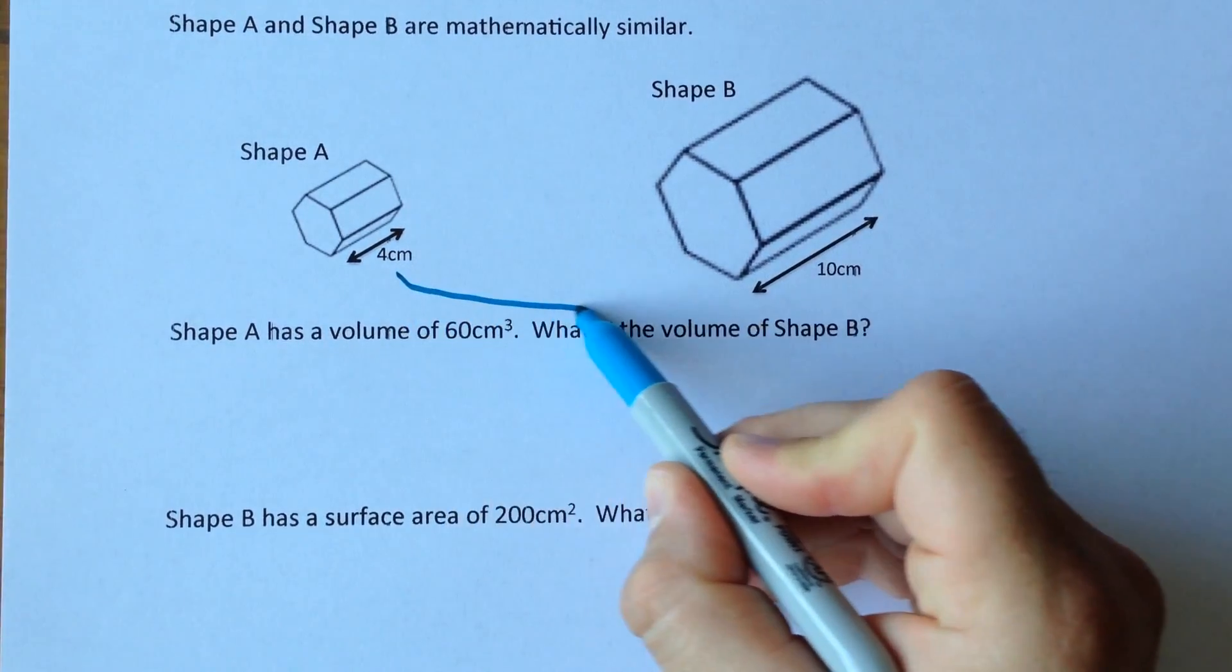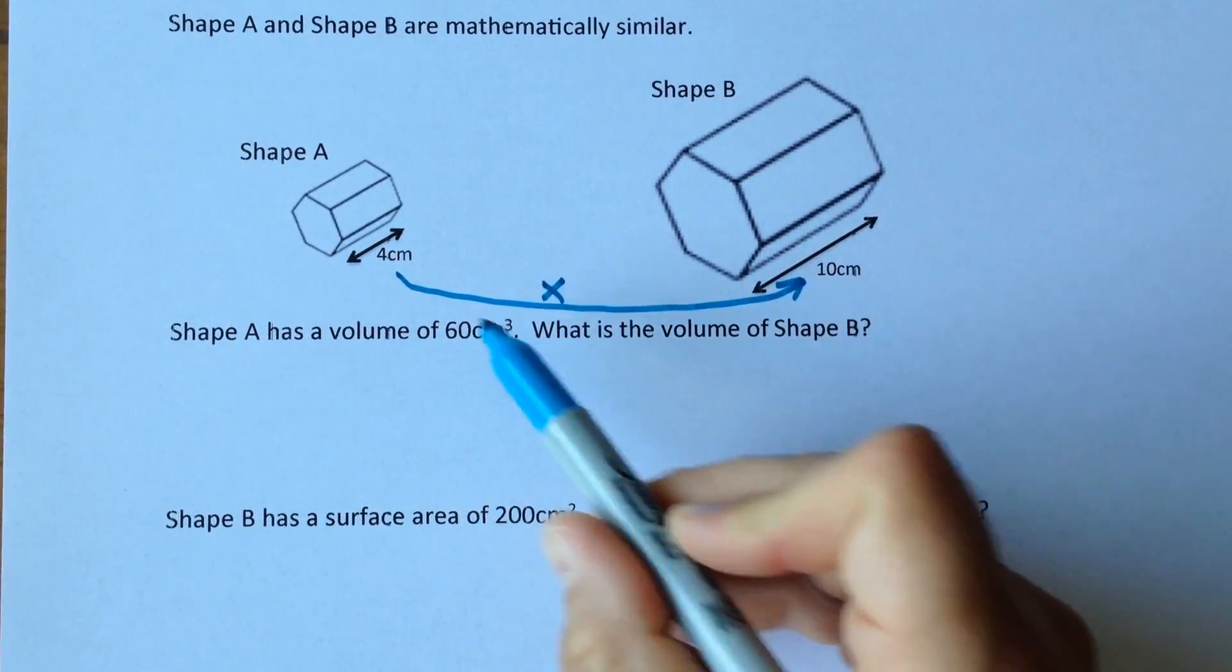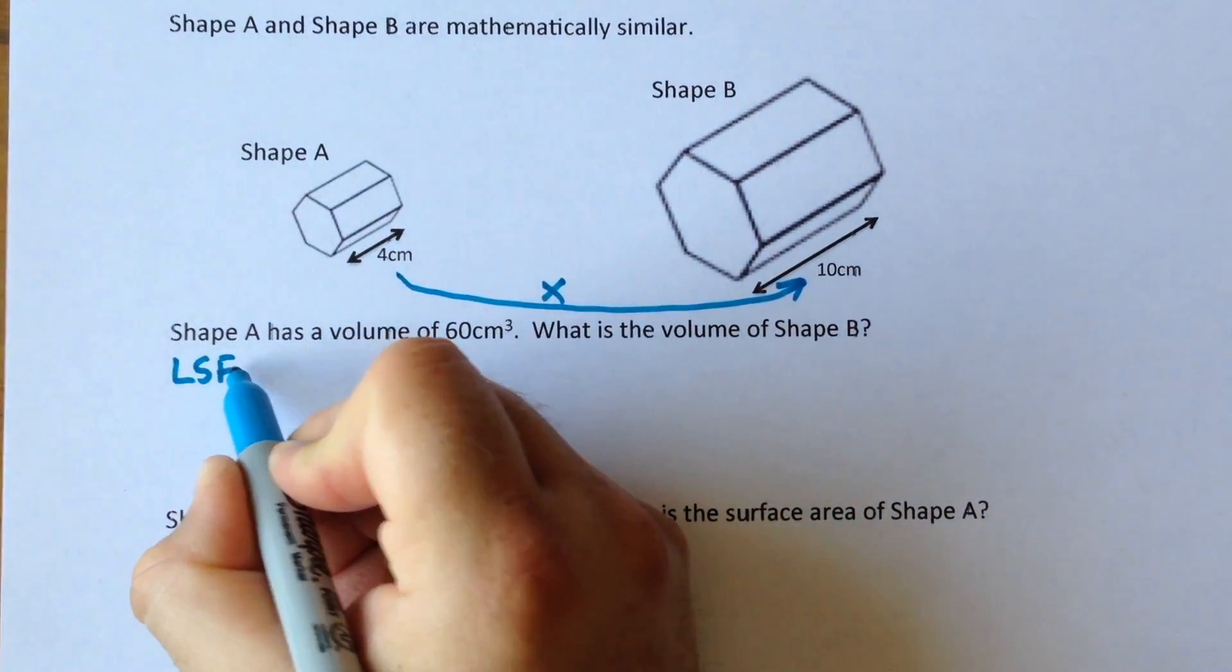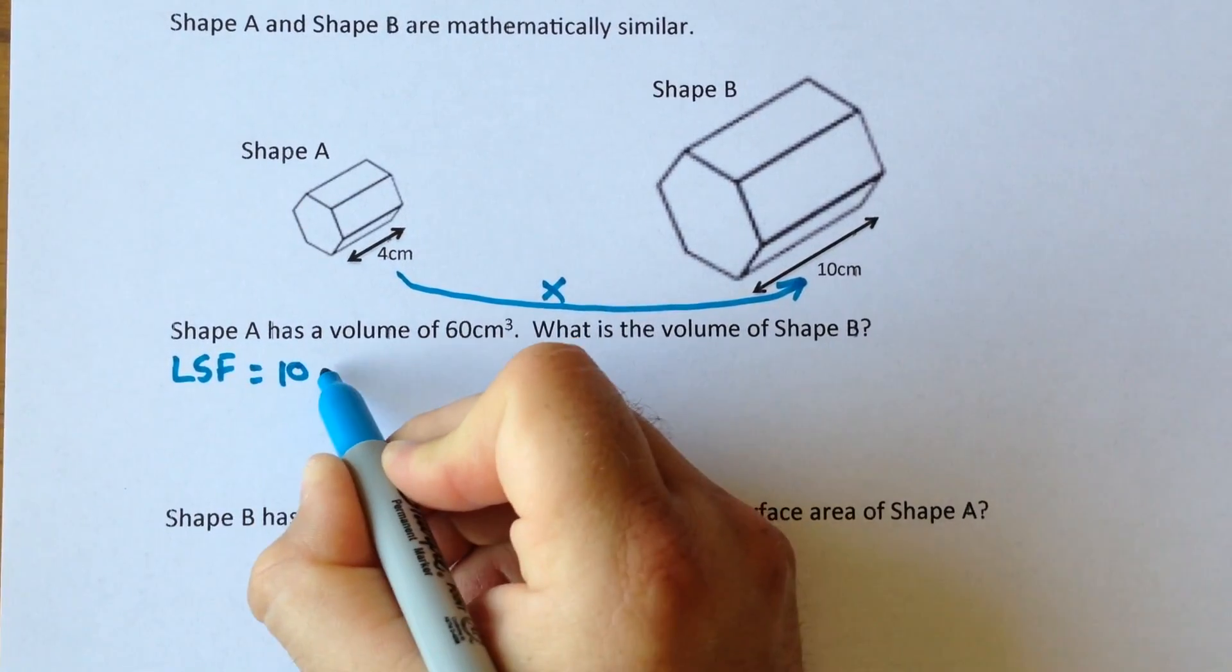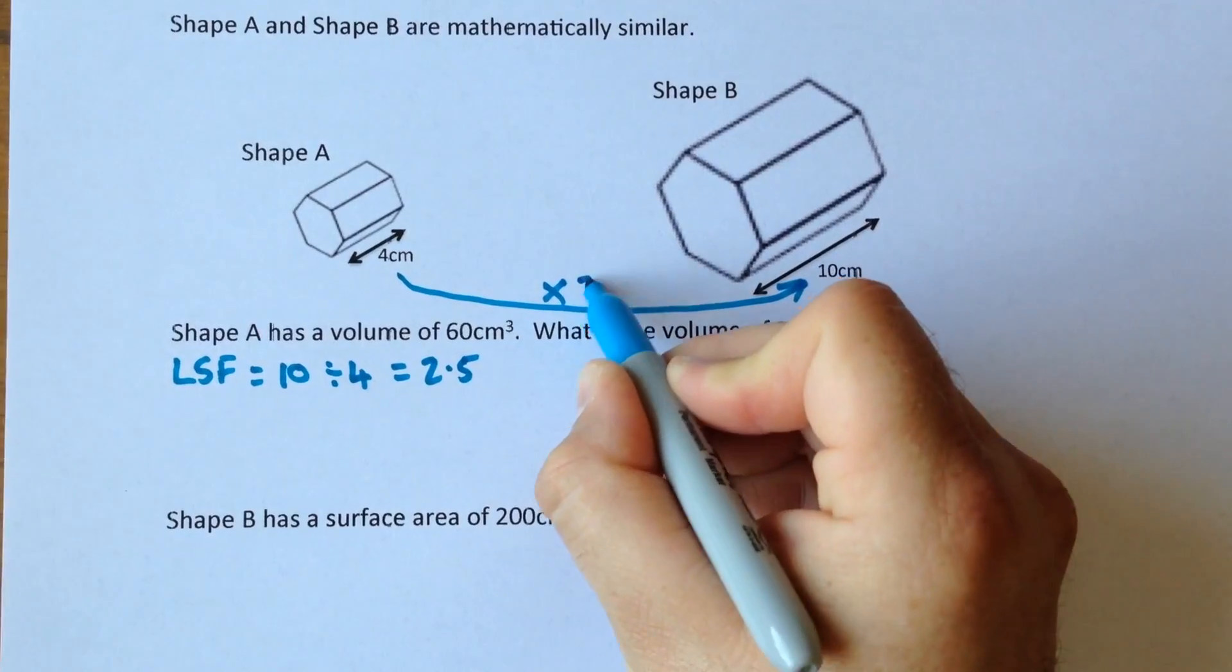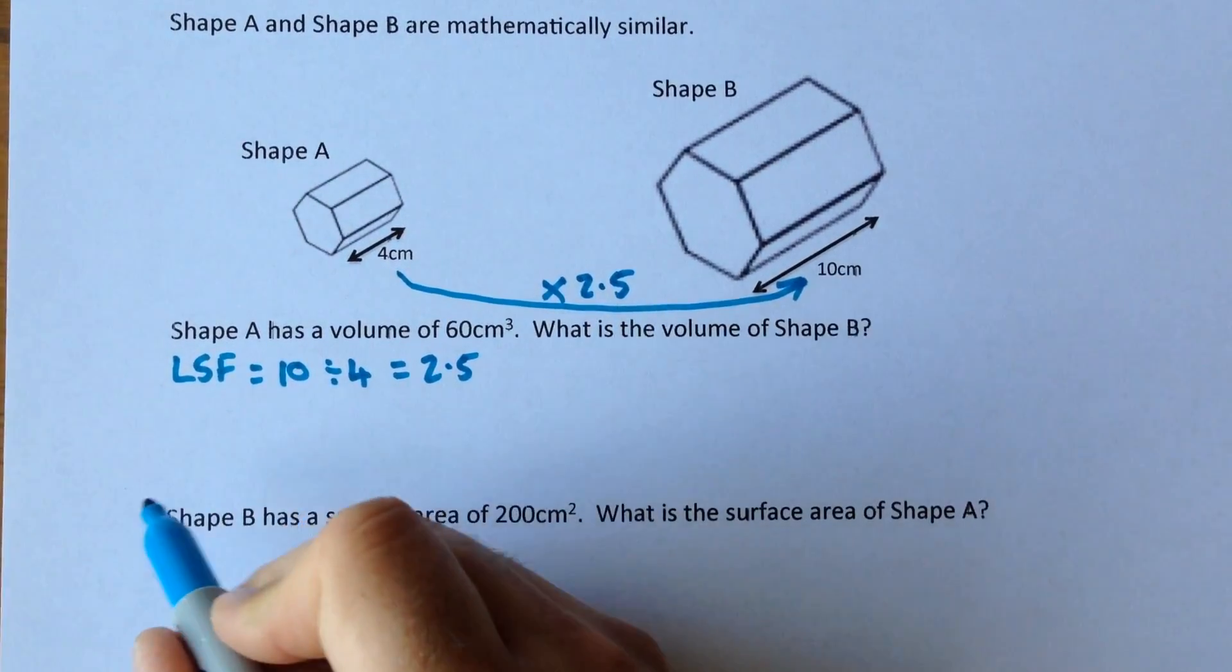So first of all we need to figure out what the length scale factor is to get from there to there. So length scale factor equals 10 divided by 4 which gives us an answer of 2.5.